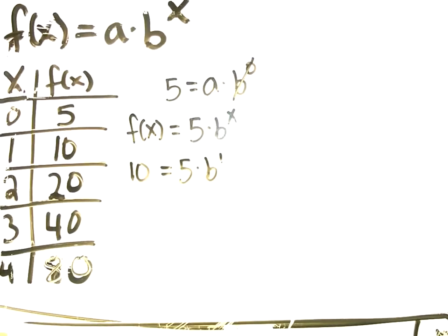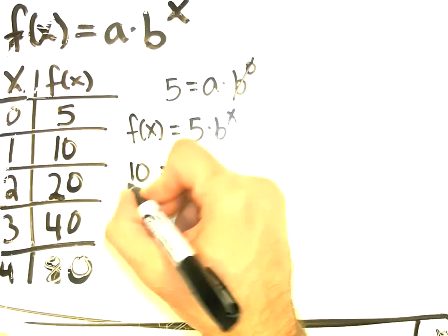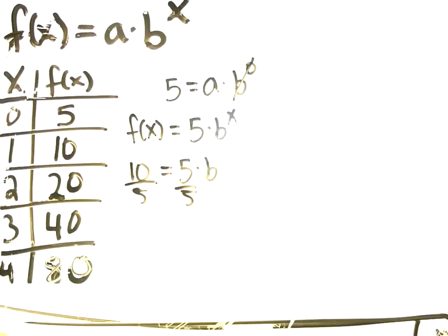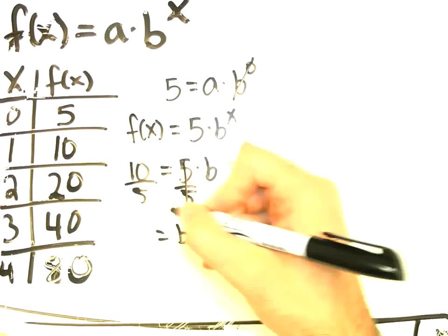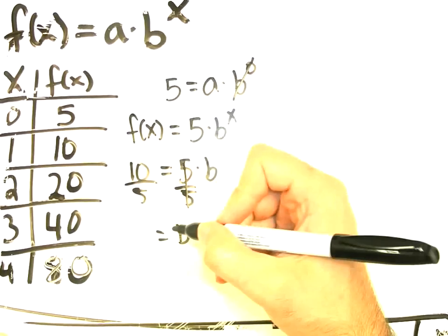Well, what's B to the 1? Yeah, that's right. It's just the same thing as B. What to do next? Right. Divide both sides by 5. And I get B is equal to 10 over 5. 10 over 5 simplifies to 2.